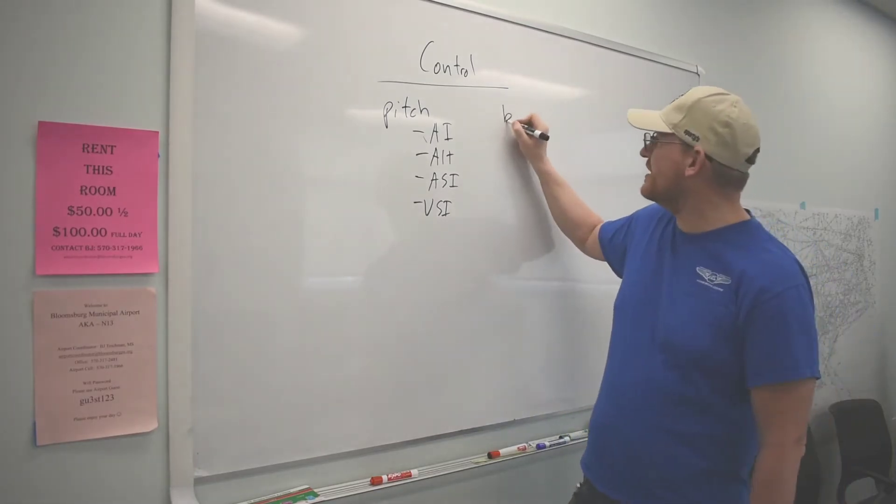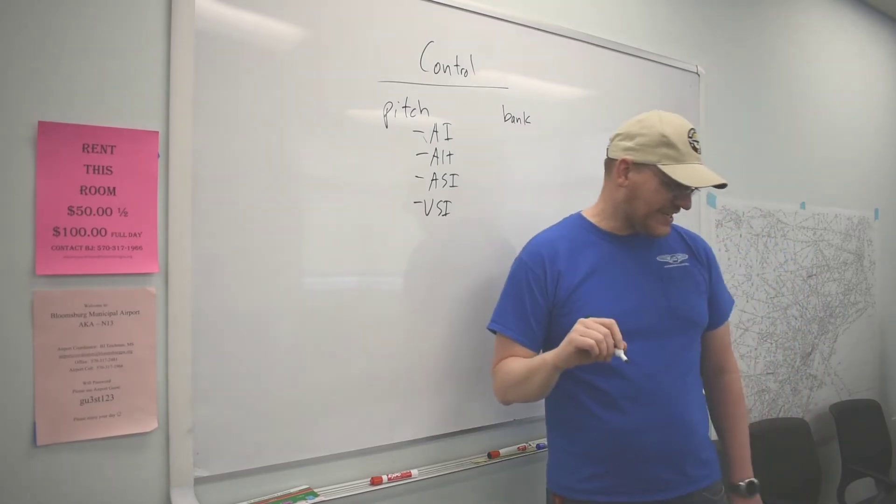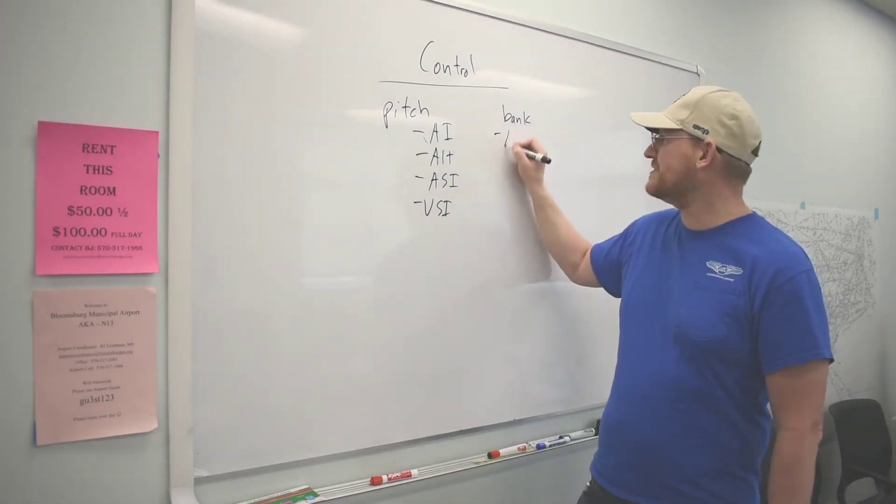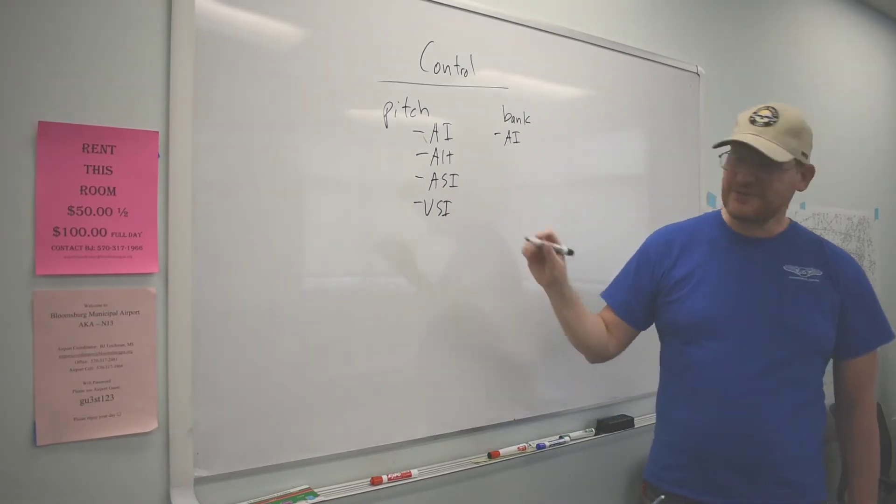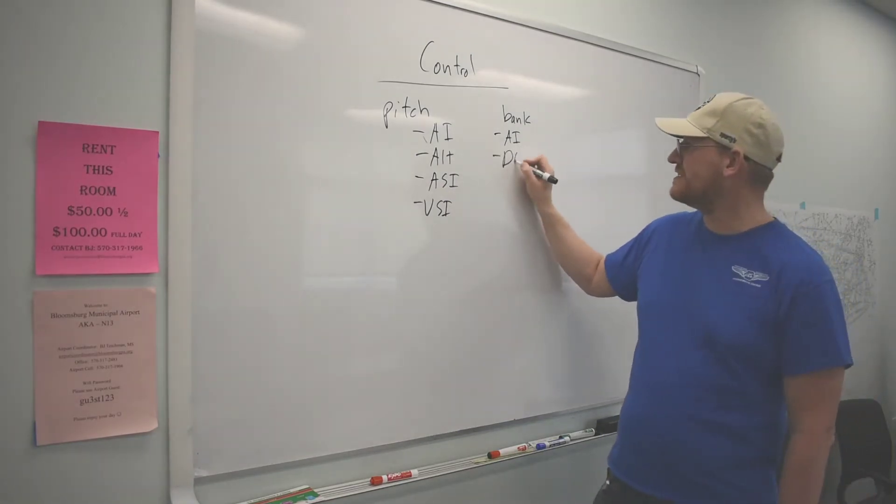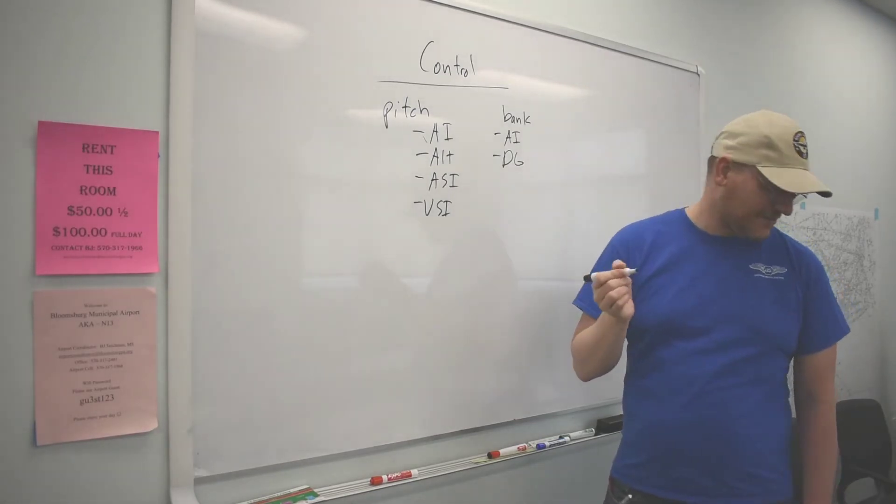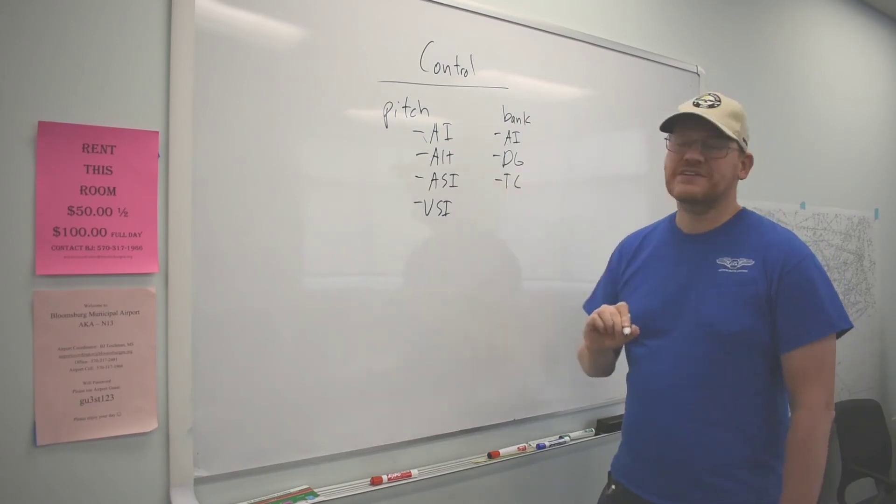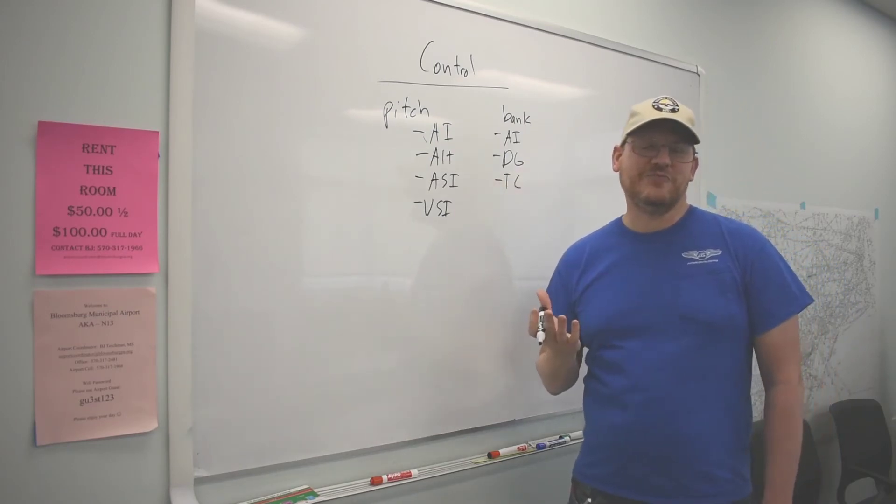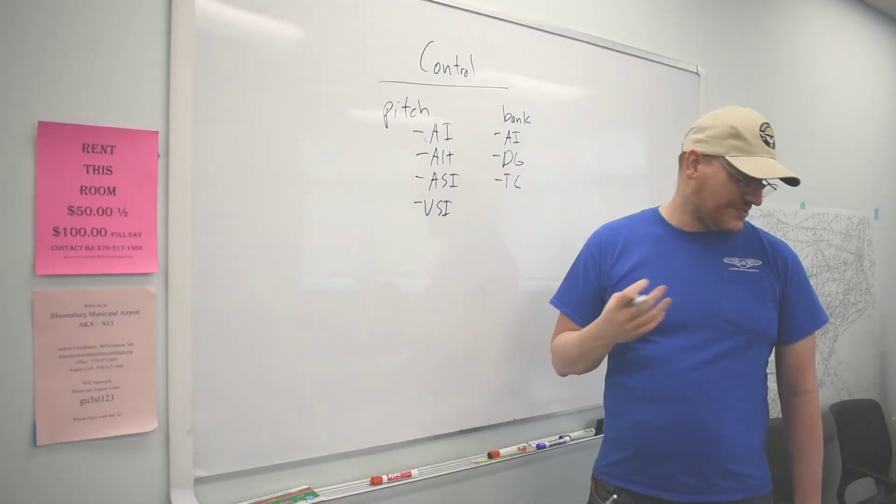Then we have bank. What instruments tell us if we're banking? Guess what? First one, AI, attitude indicator. Second one, DG, directional gyro. It will tell you if you're turning, if that's not what you desire. Turn coordinator won't tell you how much you've banked, but it will tell you that you're turning.